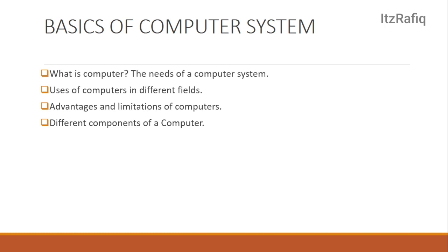For the memory table, remember how many bits make a byte, how many bytes make a KB — remember this table. After that, see the difference between RAM and ROM. RAM has mainly two types, and ROM also has some types like PROM, EPROM, EEPROM, etc.